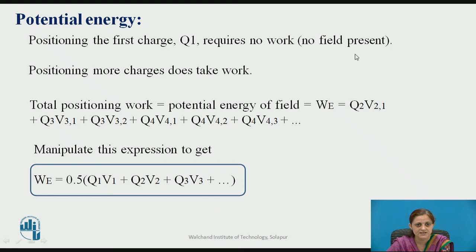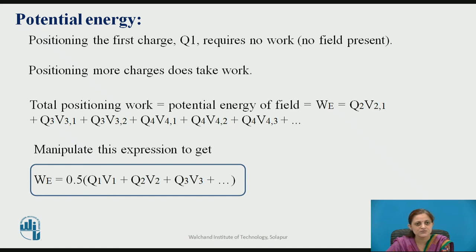Positioning more charges in the presence of charge q1 requires work to be done. The total potential energy of the field can be written as q2 times the potential of q1 at the location of q2, plus q3 v31 plus q3 v32, and so on. Manipulating this expression gives: W_E equals (1/2)(q1 v1 plus q2 v2 plus q3 v3), continuing for all charges. Thus the potential energy is calculated by the product of each charge and its corresponding potential.